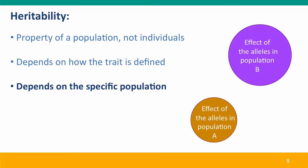Heritability depends on the population being studied, because different populations typically don't have exactly the same alleles or the same proportions of alleles, and so the effects on phenotype will depend on which alleles are present. In one population there may be only alleles causing a small amount of variation in the trait, whereas in another population the effect might be much bigger because there are alleles present, or alleles in higher frequencies, that have stronger effects on the trait.